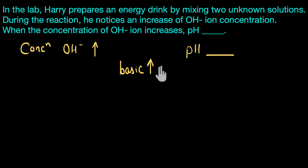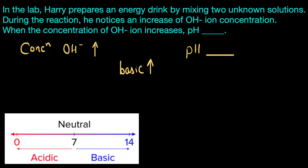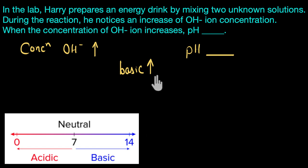Now what will happen to the pH of a solution that is becoming more basic? Let's bring back the pH scale. A pH of seven is neutral, and a pH greater than seven means a basic solution. A pH of 14 means the most basic solution. So as the pH value increases, the solution becomes more and more basic. Here our solution is becoming more basic, so its pH value should be increasing. The answer is: pH value increases.